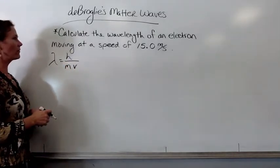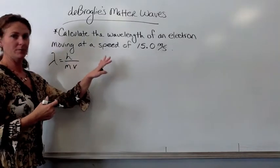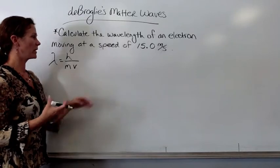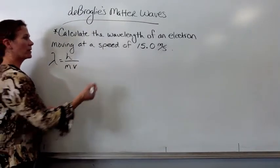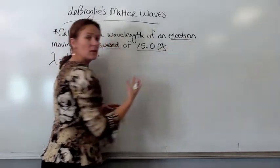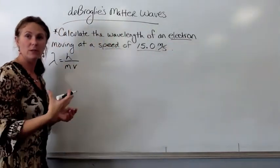So, the wavelength of an electron moving at a speed of 15.0 meters per second. Let's see, what we know is the speed of the electron. The mass of an electron we're going to always look up and it is on your resource page.